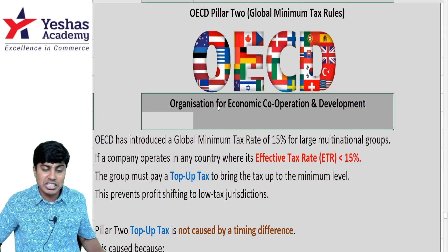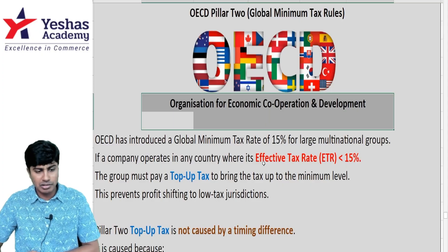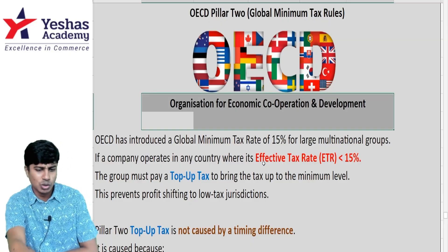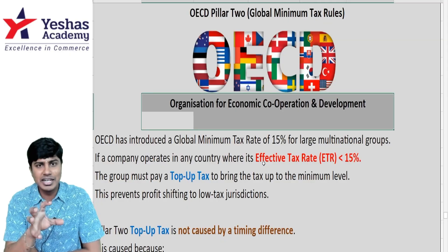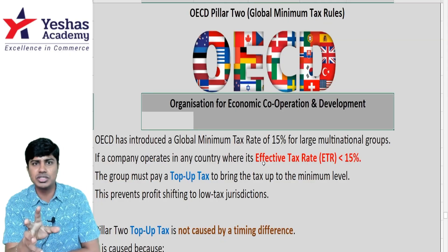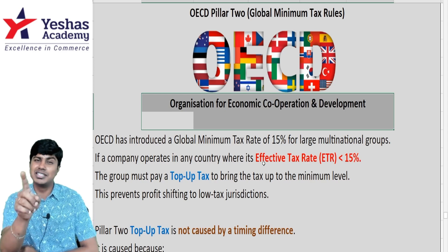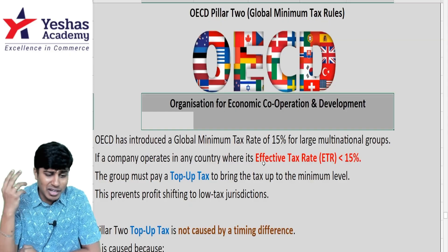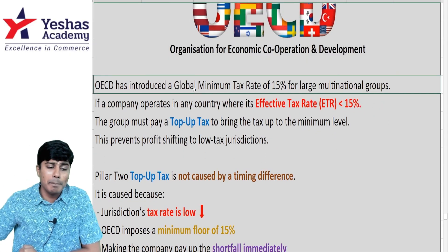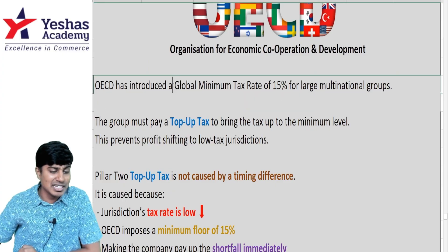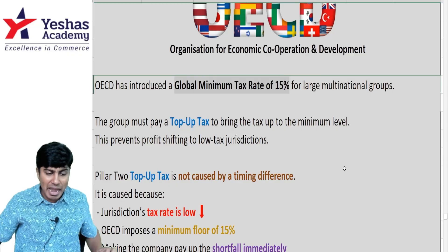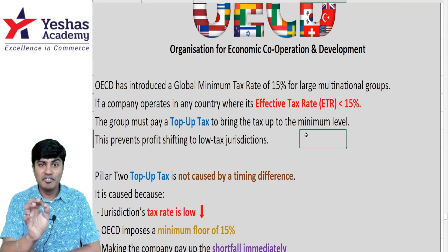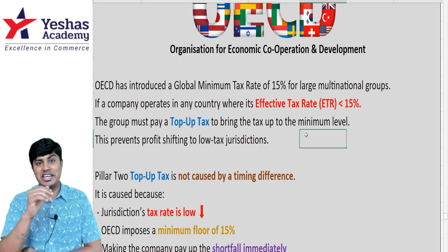There is an international body called the Organization for Economic Cooperation and Development — OECD. All these countries together have formed this global body to ensure that no country is cheated by its multinational companies through tax evasion into tax haven countries. To counter this, they introduced something called Global Minimum Alternate Tax — GMAT — applicable at 15%.